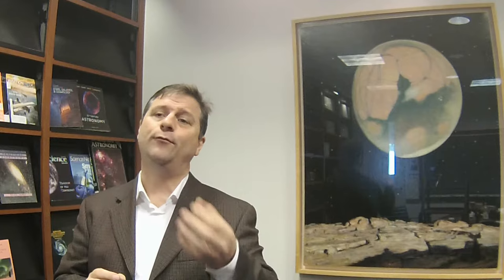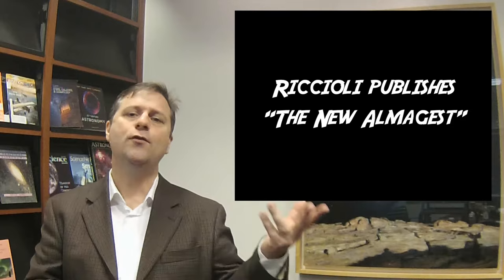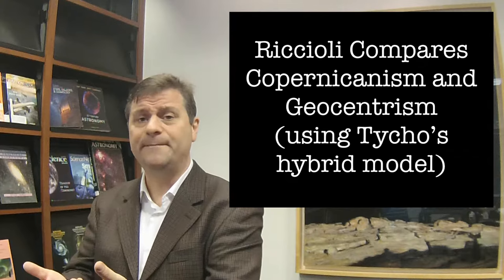So Galileo has now passed away. Nine years later in 1651, Riccioli publishes, republishes what he calls the new Almagest. Remember Ptolemy's Almagest, which was a tour de force of a very long time ago. But Riccioli says, all right, what he does is he argues and he goes through and looks at all the arguments in favor of the Copernican model of the cosmos and in favor of Tycho Brahe's model where the sun orbits the stationary earth.